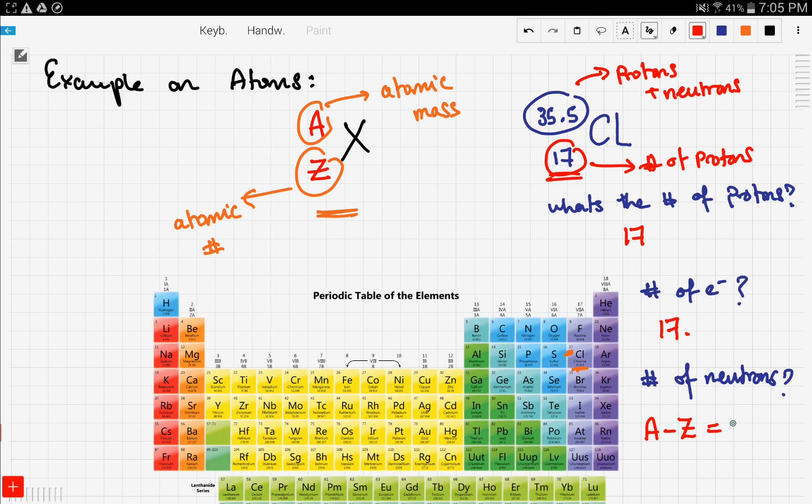This would give us 35.5 minus 17. Now if you have a calculator beside you and do the math, let's see what this is. So it's 35.5 minus 17, which is going to give us 18.5. So 18.5 is the number of neutrons.